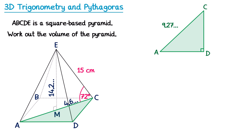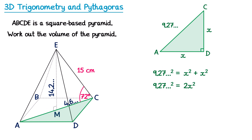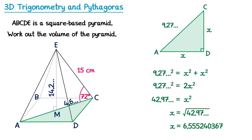Now we want to find the side lengths AD and DC of the square base. Since the base is a square, AD = DC = x. Using Pythagoras on triangle ADC with hypotenuse AC: (9.27...)² = x² + x² = 2x². Dividing both sides by 2 and square rooting gives x = 6.5 and so on centimetres. So we've now found the lengths of the square base: AD = DC = 6.5 and so on centimetres.